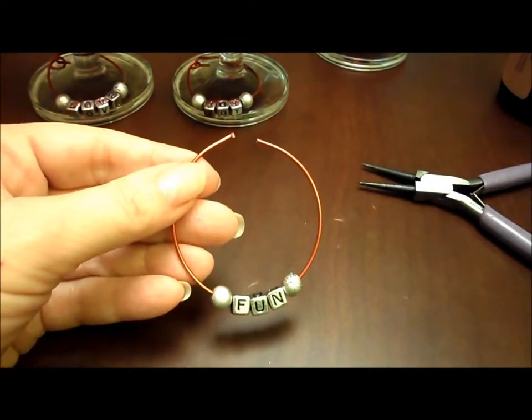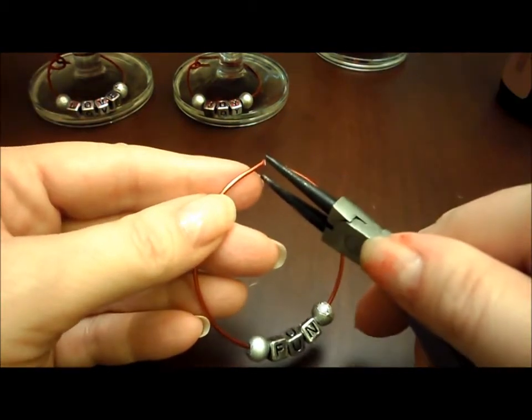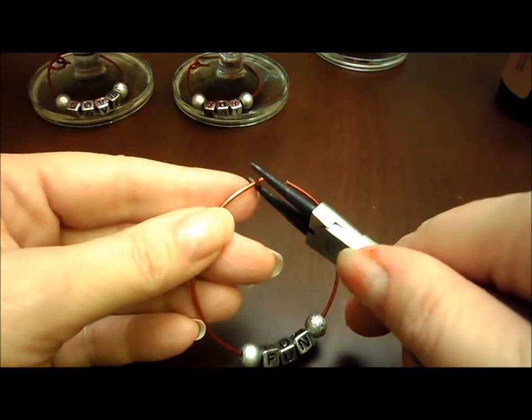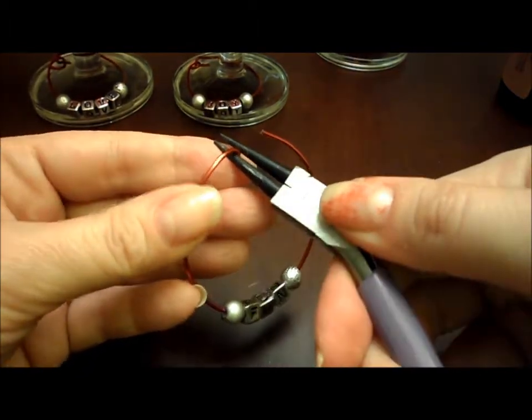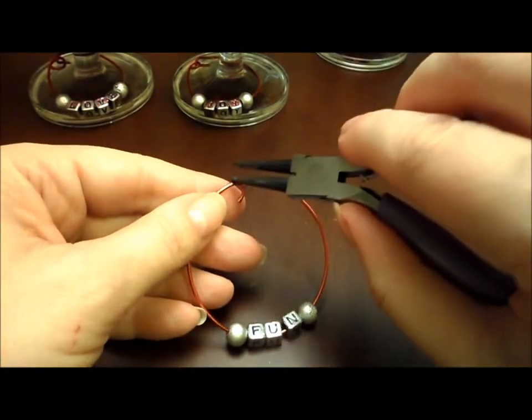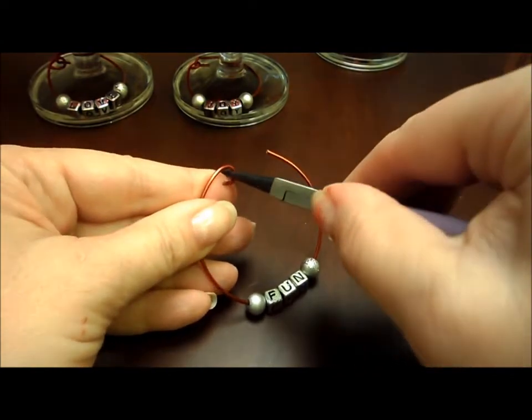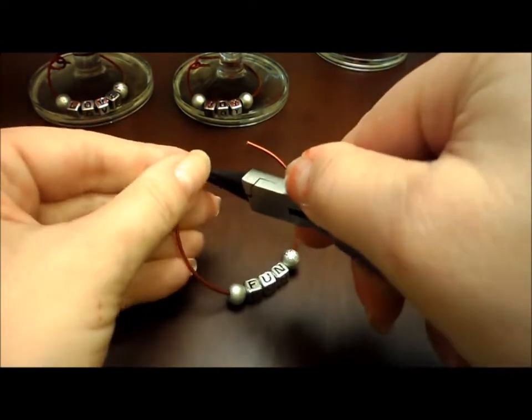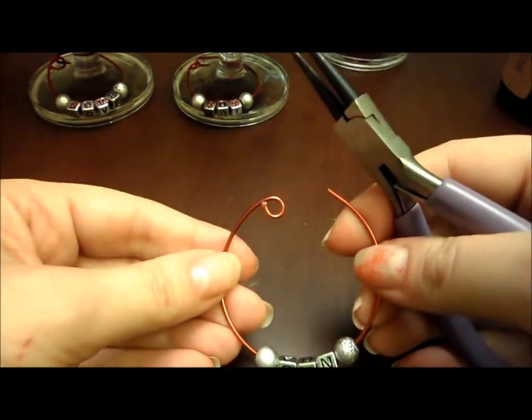Now the next thing you want to do is make your loop. So we're going to take our round nose pliers. Grab this side. And I'm going to start bending. We want that fairly easy to hook, so we want it pretty big. When it's to that side, you're done.